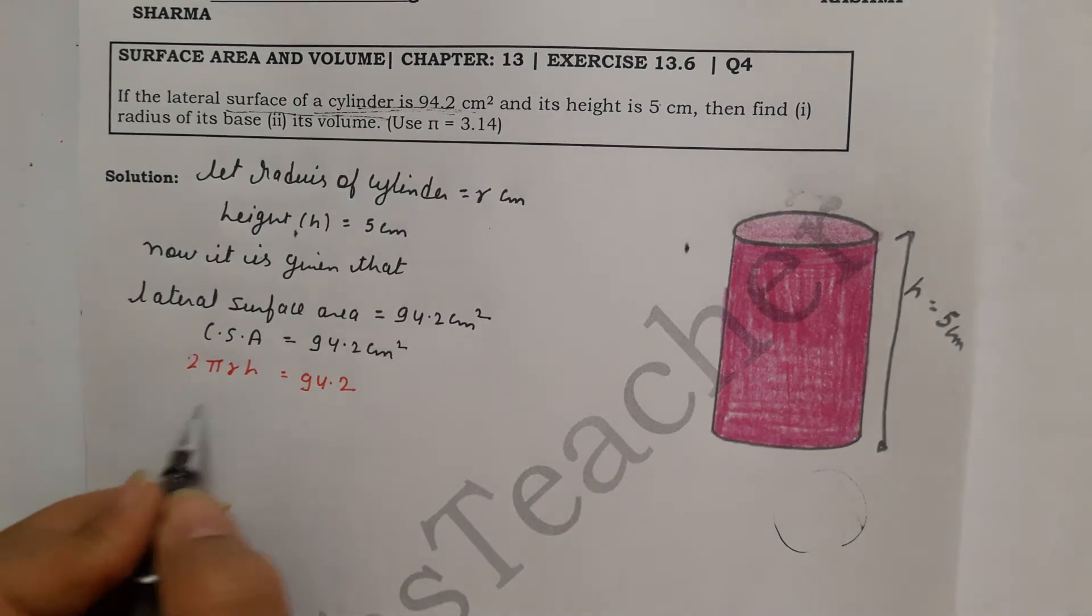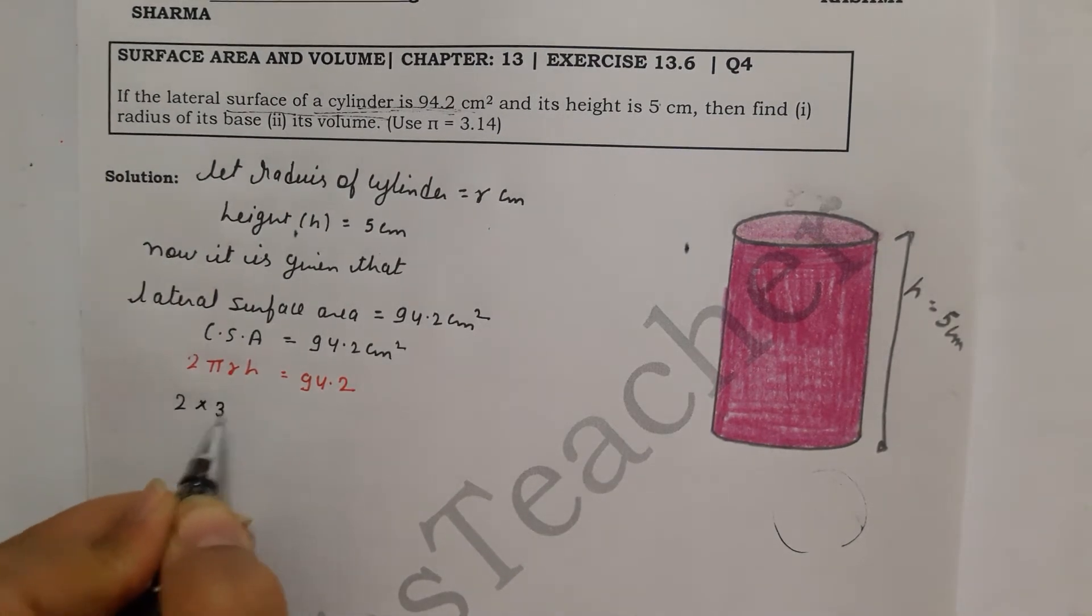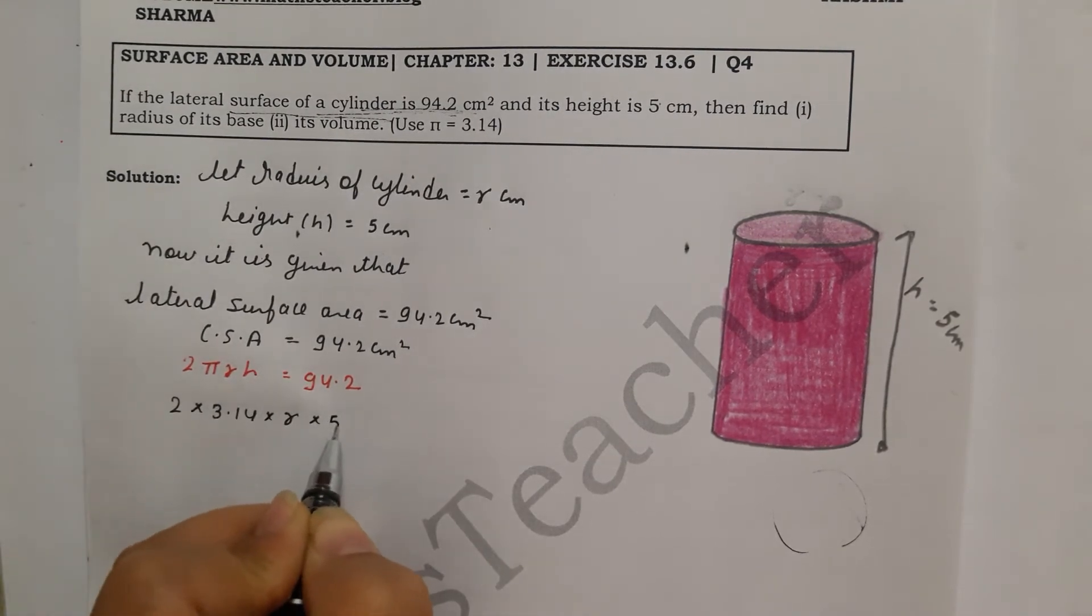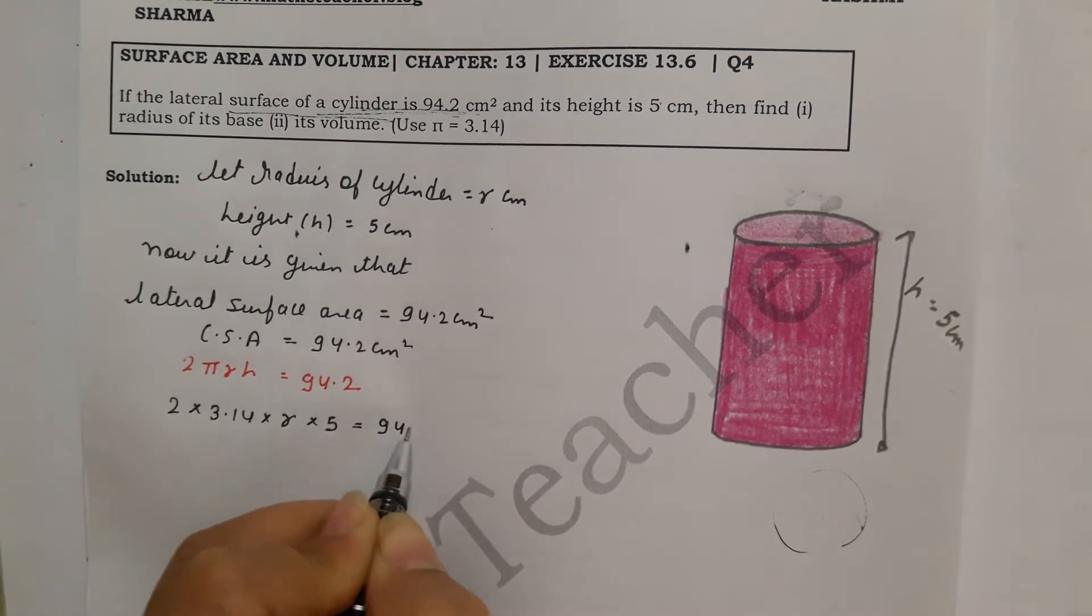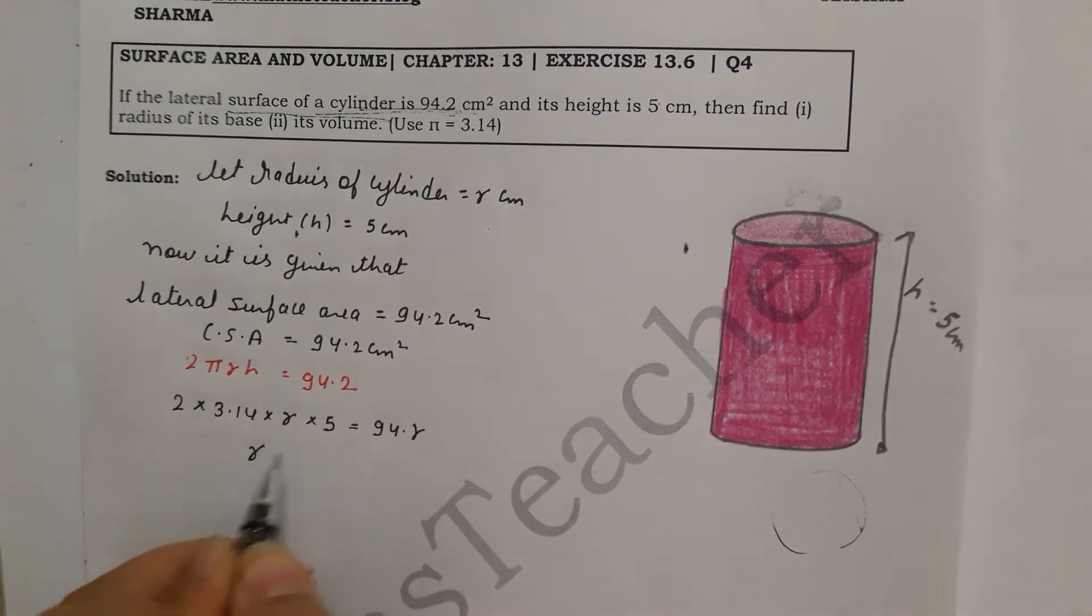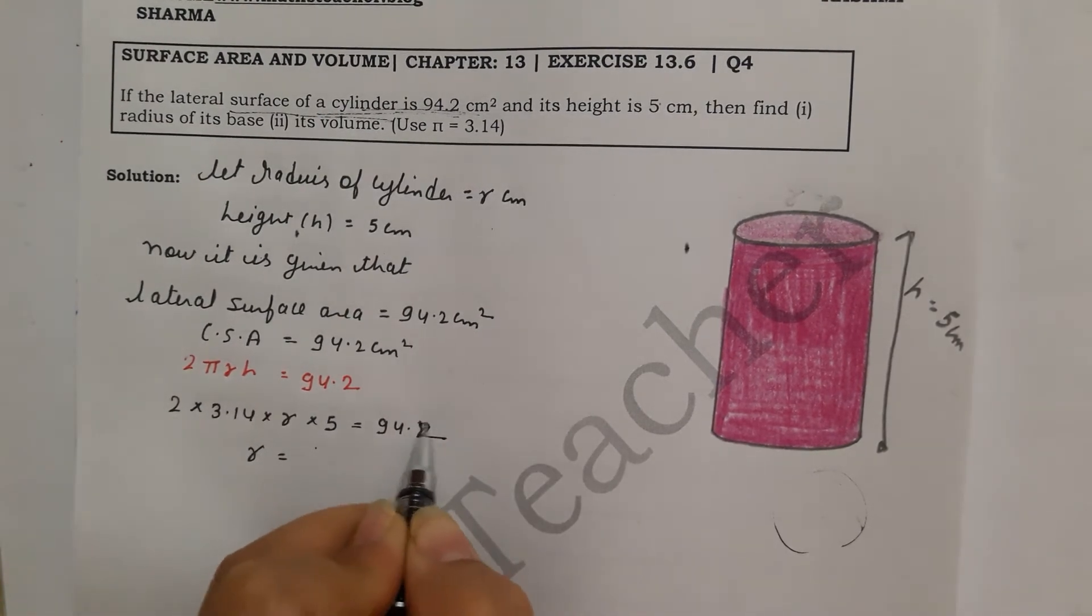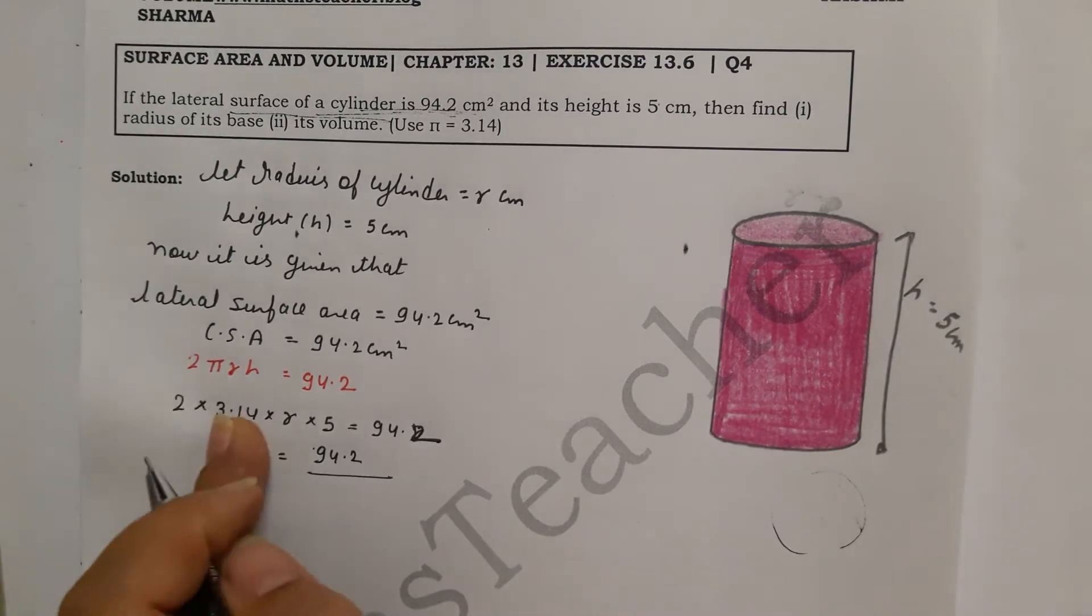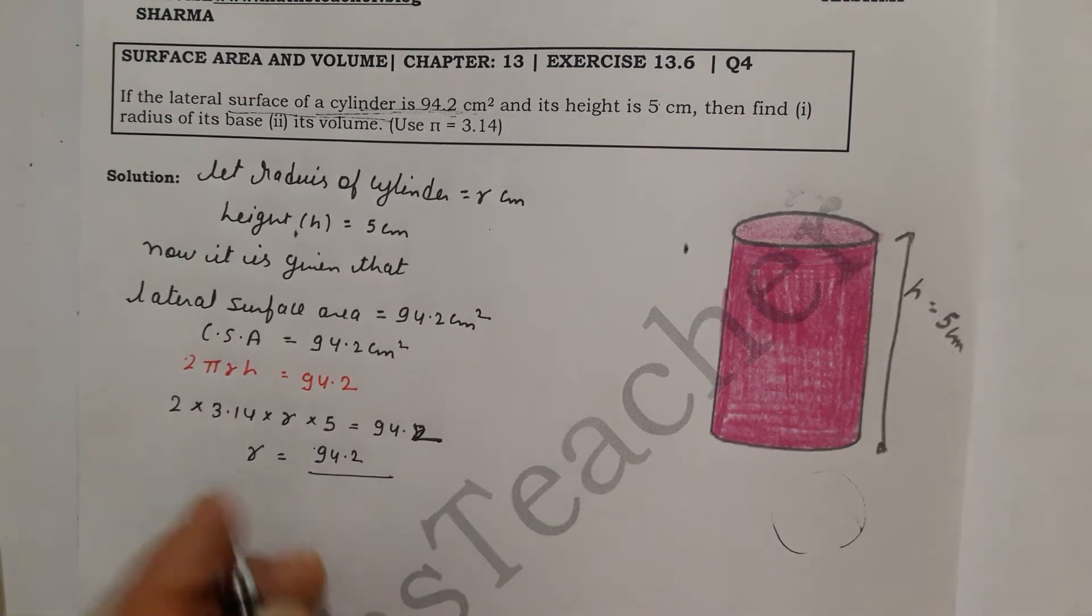So let's put the values. Now you have to find the radius. Height is 5 cm, so you need radius and transfer all the others here. So radius equals 94.2 divided by 2 × 3.14 × 5. From here, the numerator goes to denominator.